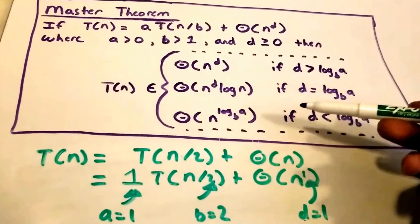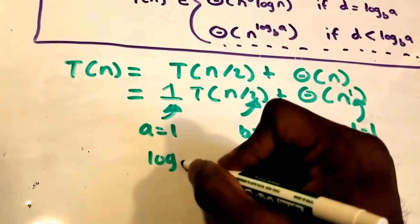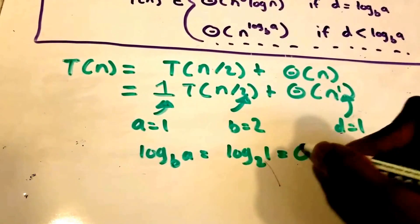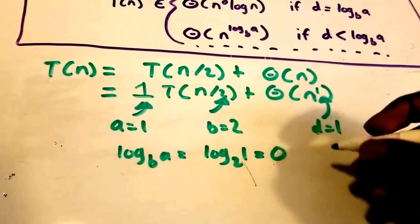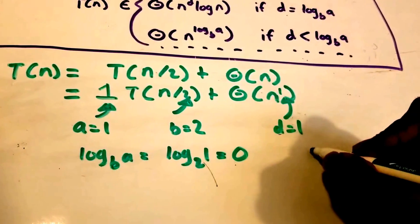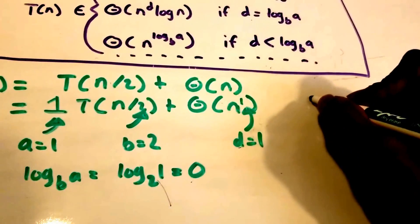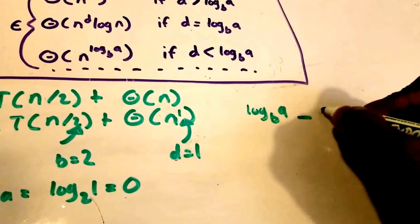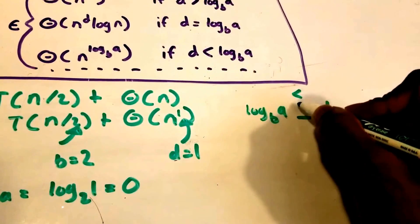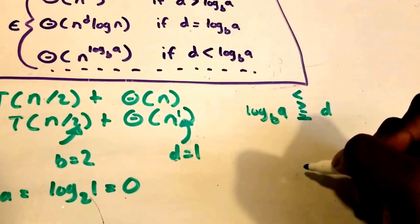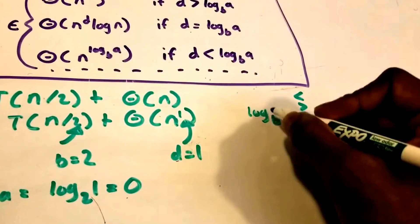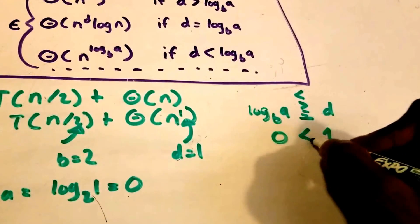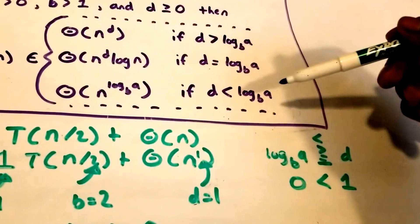log_b(a) = log_2(1), which equals 0, because 2^0 = 1. Our d is equal to 1, so we need to check which condition applies. log_b(a) = 0 and d = 1, so 0 is less than 1.